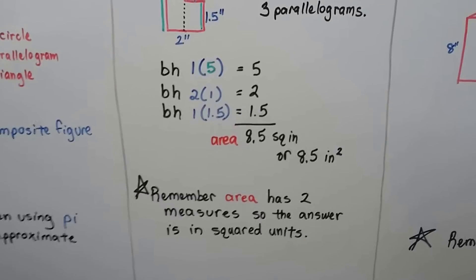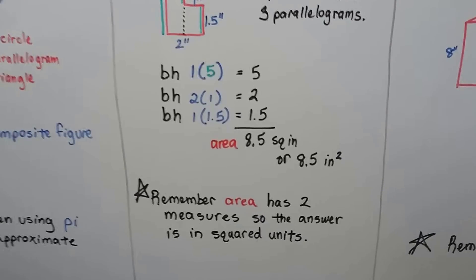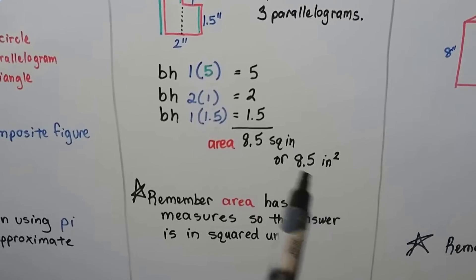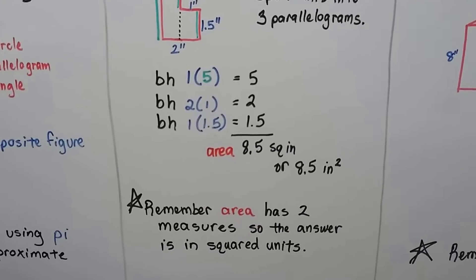Remember, area has two measures. Length times width, or base times height. That's two measures. So, the answer is in squared units. It's going to have a little two exponent, or it's going to be squared.